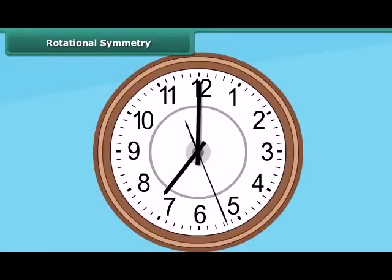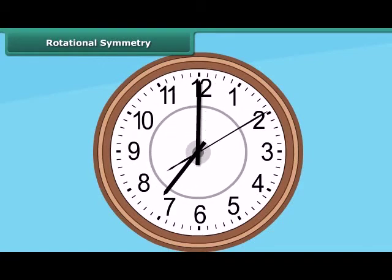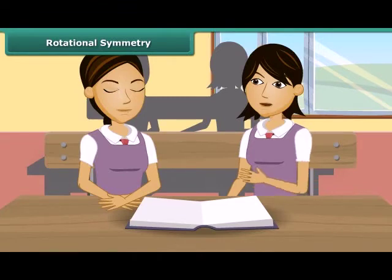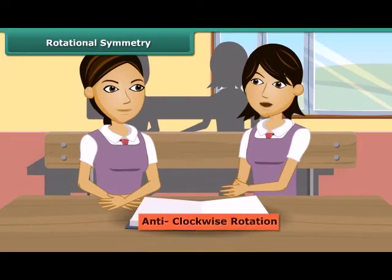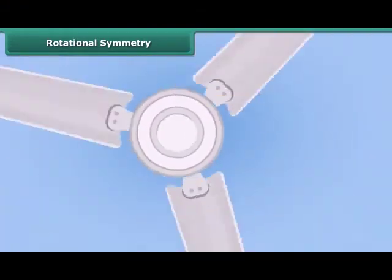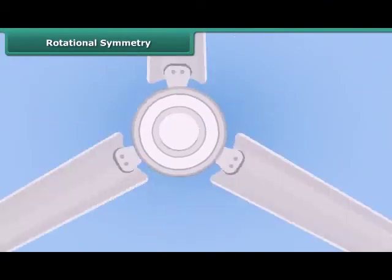Now look at this clock — it's going round and round, which means it is rotating. The hands of the clock rotate in a clockwise rotation. When something rotates other than clockwise, we call that rotation anticlockwise rotation. When an object rotates, its shape and size do not change. This rotation turns an object about a fixed point, called the center of rotation.